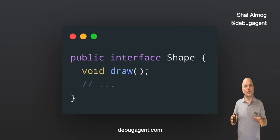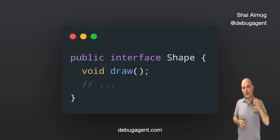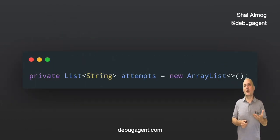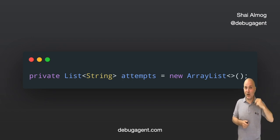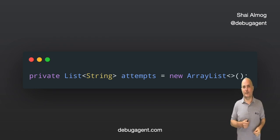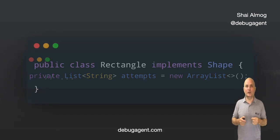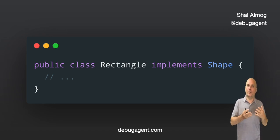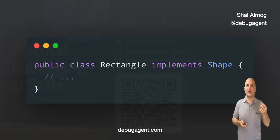Taking our previous example into consideration, the interface for shape would look like this. Notice that draw is public and abstract — we just don't need to explicitly say that in this case. Remember this code? List isn't a class — it's an interface. In fact, it's an interface that inherits from an interface called collection. Any class can implement multiple interfaces, but an interface can only extend one interface. Instead of extending, we use the implements keyword when implementing an interface, and it forces us to implement all the methods in the interface or define our class as abstract.